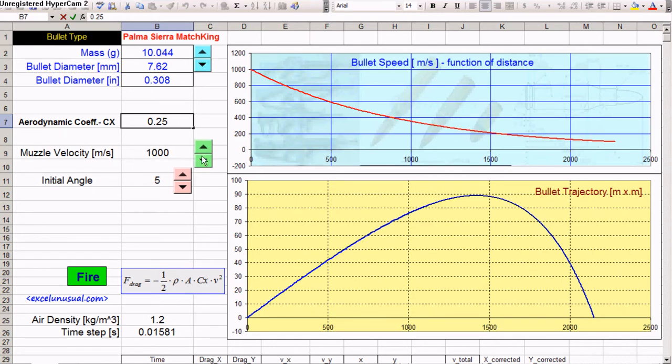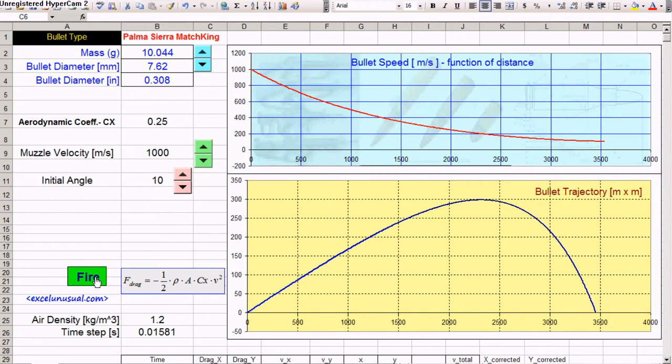The muzzle velocity, you can change it in tenths here. And the initial angle, you can put it from 0 to, I believe, 90 degrees. Let's put it at 10 degrees and then, after you do this, you hit fire and the new trajectory will be calculated.